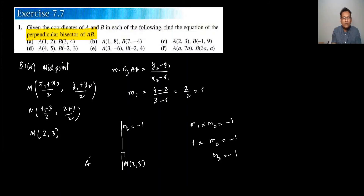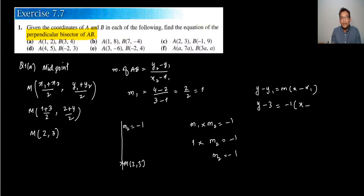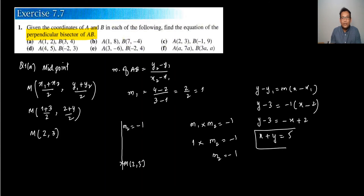Now we have the coordinate (2, 3) and gradient minus 1, so we can find the equation: Y minus Y1 equals M times X minus X1. That gives Y minus 3 equals minus 1 times X minus 2, so Y minus 3 equals minus X plus 2, which simplifies to X plus Y equals 5. You can write it in this form or in Y equals MX plus C form — both are fine.